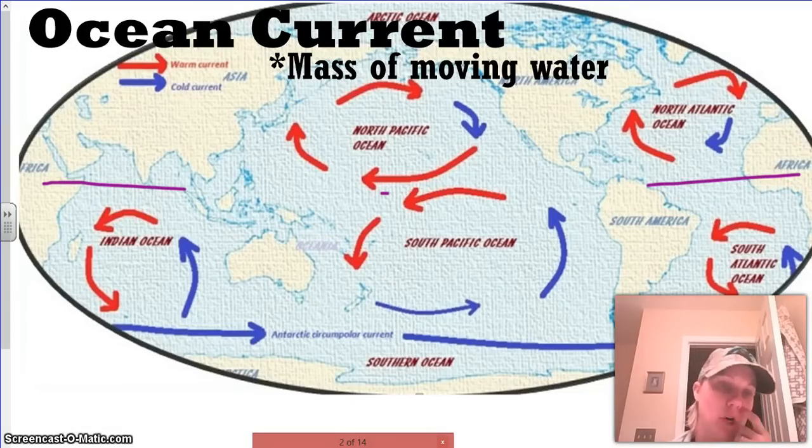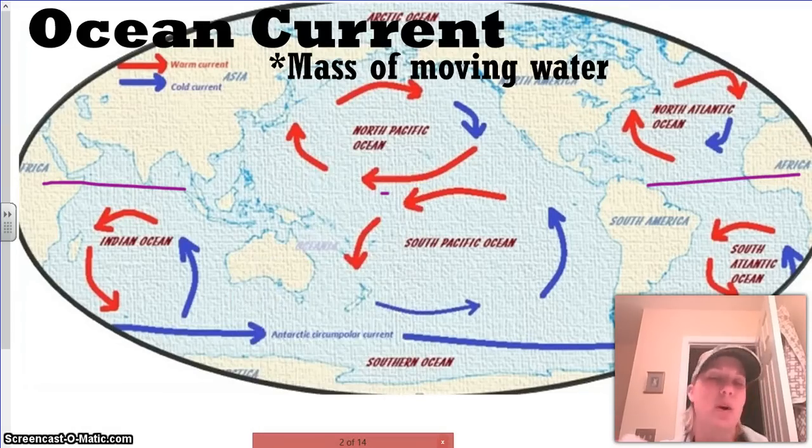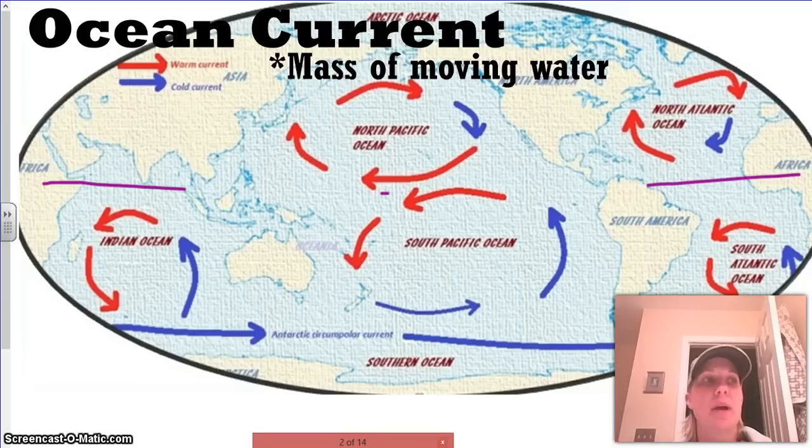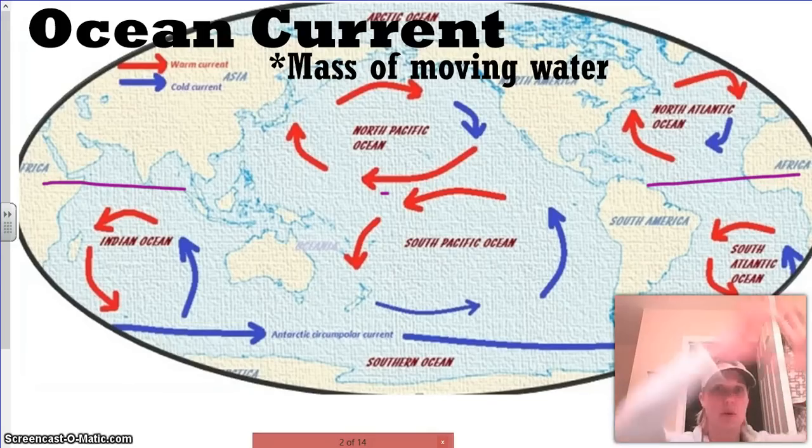First thing we want to talk about is what an ocean current is, and an ocean current is simply a mass of moving water. You have to imagine, if you watched Finding Nemo and they talk about the EAC, the East Australian current, the one the turtles are riding through, that's what we're talking about. It's almost like imagining a river of water moving through a larger body of water.